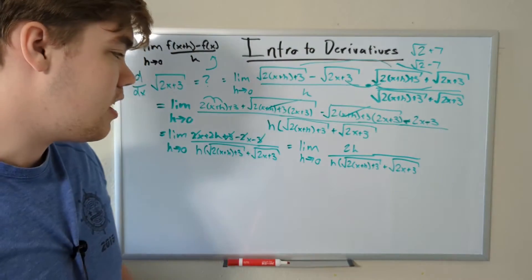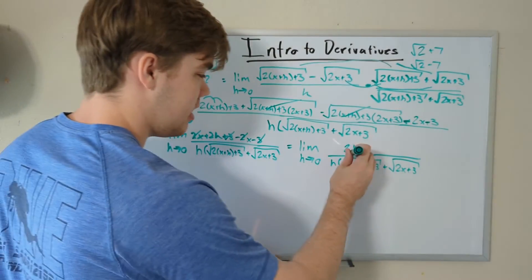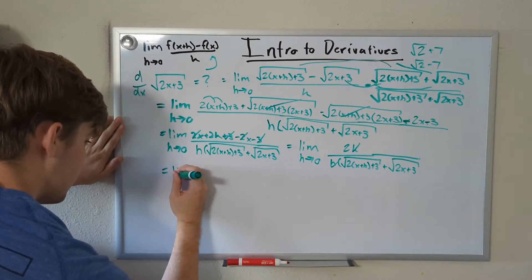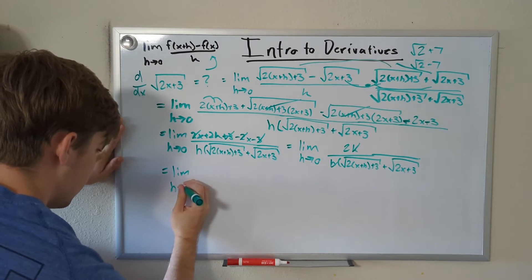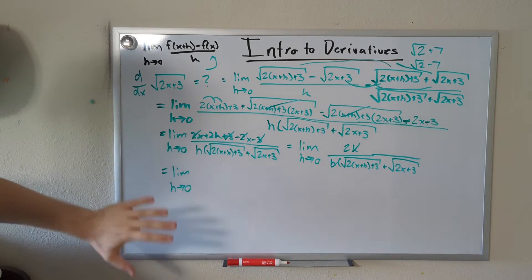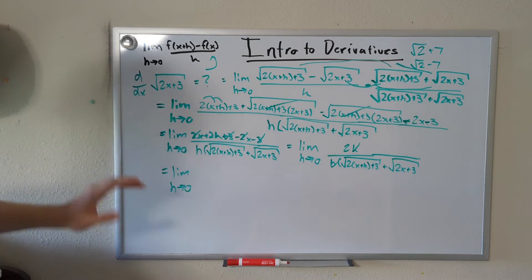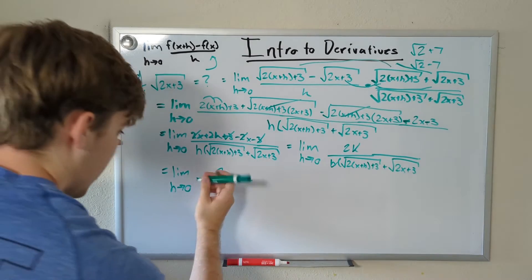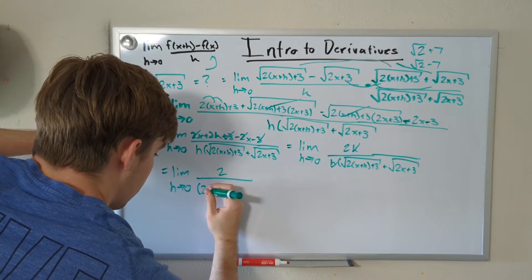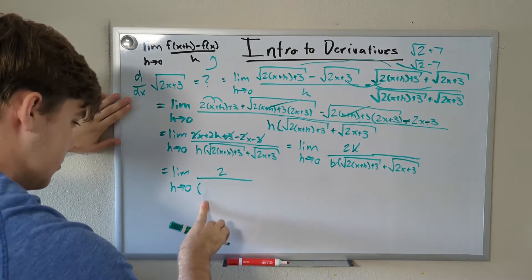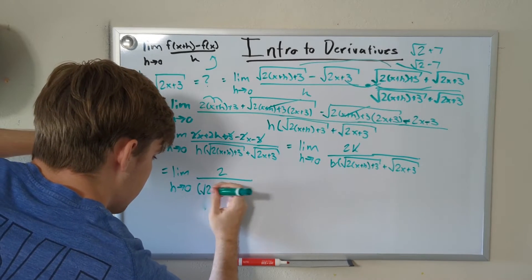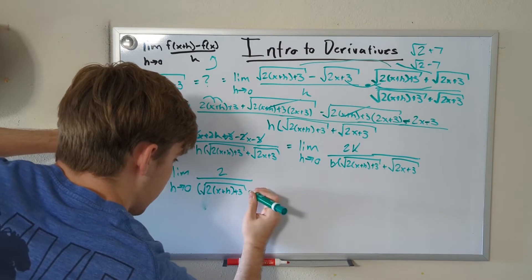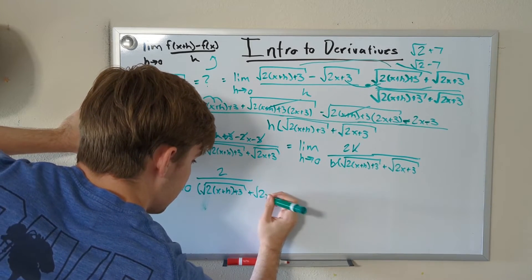Now we're really getting somewhere. We can cancel out the h on top with the h on bottom. So this is now equal to the limit as h approaches 0 of 2 divided by the square root of 2(x+h)+3 plus the square root of 2x+3.